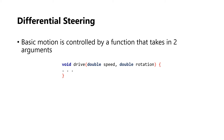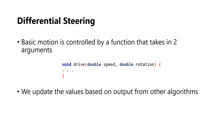The basic motion of the robot is controlled by a function that takes in two arguments. Speed sets the base speed of wheel left and wheel right, while rotation is updated organically based on the combination of outputs from my other algorithms.